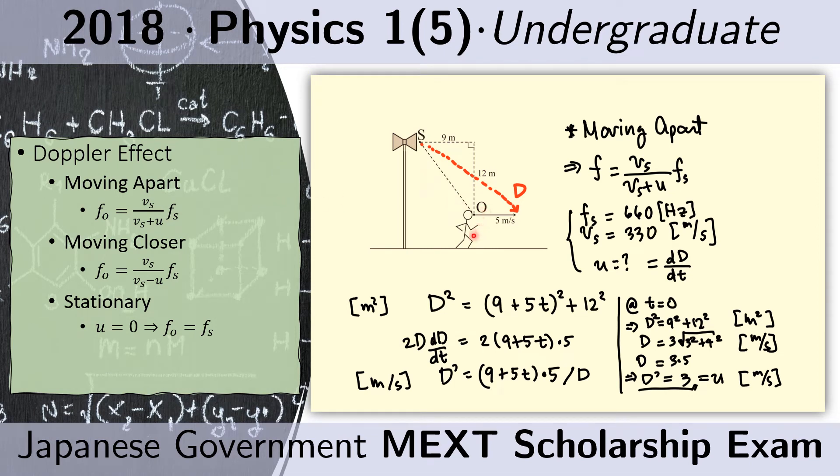For this problem, the observer is moving away from the source. That tells us that the source and the observer are moving apart, and so we use this equation here.